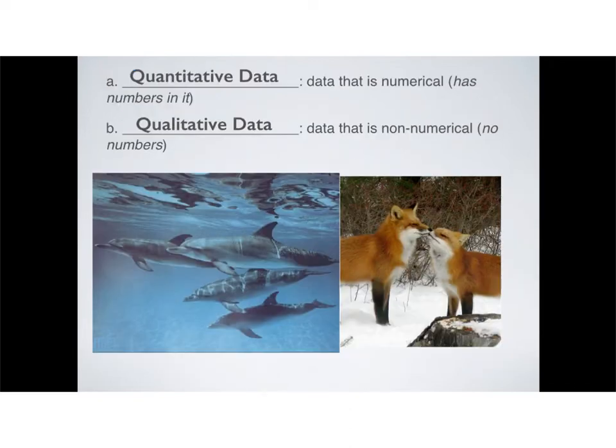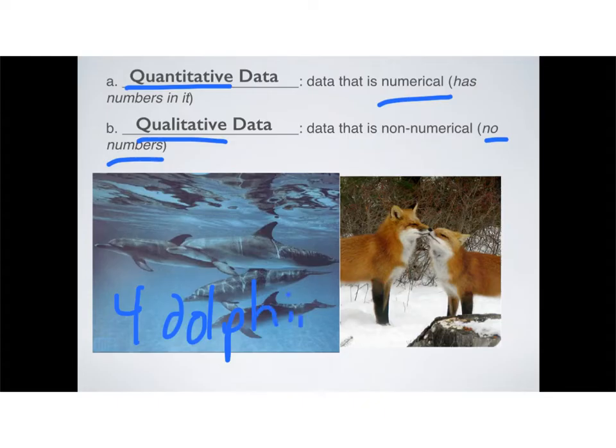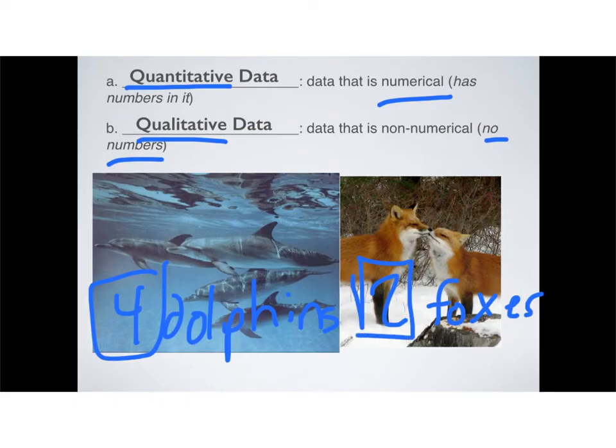There are two broad types of data, and we're going to be looking at both whenever we do labs, quantitative and qualitative. Quantitative is numerical, which means it has numbers in it. Qualitative is descriptive, and so there are no numbers in it. For example, in this picture, quantitative data would be that there are four dolphins in this pod. On the other hand, if you were describing the type of dolphin that they are, bottlenose dolphins, or their gender, or something else, that would be qualitative data. In this picture, we have two foxes, but if you were telling me that they were red foxes, that would be qualitative data. So quantitative involves numerical stuff. Qualitative involves everything but numerical stuff. It's descriptive.